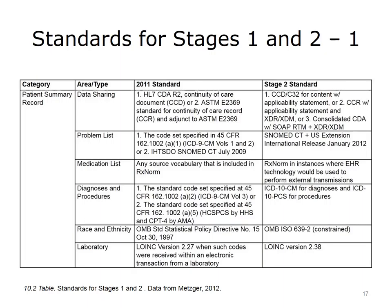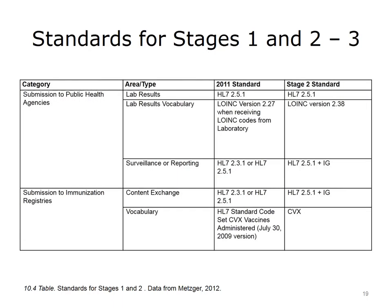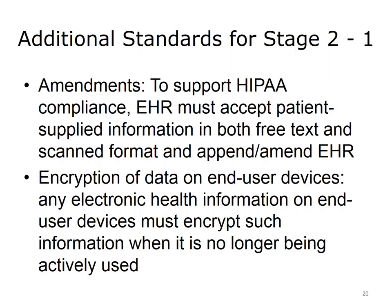There have also been standards specified to achieve Meaningful Use, both in the original Stage 1 and in Stage 2. For example, the patient summary record had to use the Continuity of Care document, or CCD. The problem list needed to be in SNOMED-CT. The medication list must be in RxNorm. Diagnoses and procedures must be in ICD-10. Laboratory results must be in LOINC. Some prescribing functions use standards such as NCPDP and RxNorm. Electronic submission for quality reporting required certain formats from CMS. There were also standards for public health functions — whether lab results, surveillance, or immunization registry reporting — for which various versions of HL7 were required.